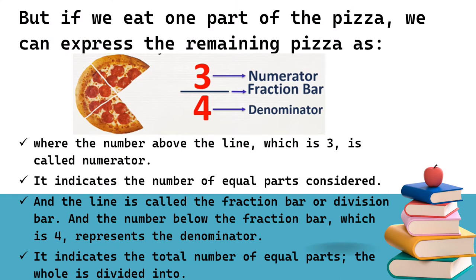But if we eat one part of the pizza, we can express the remaining pizza as three-fourths, where the number above the line — which is three — is called the numerator. It indicates the number of equal parts considered. The line is called the fraction bar or division bar. And the number below the fraction bar — which is four — represents the denominator. It indicates the total number of equal parts the whole is divided into.